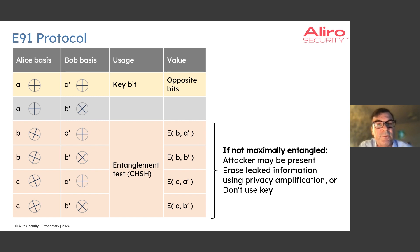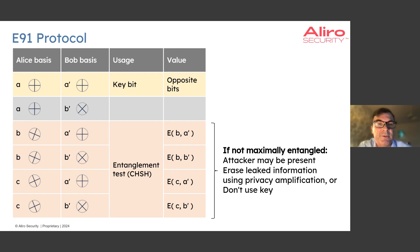This allows Alice and Bob to compute the S-value and to determine whether the photons they received are entangled or not. If the S-value is equal to two times the square root of two, it shows that the photons satisfy the monogamy of entanglement, meaning that Eve cannot participate in the entanglement and hence the key is safe.